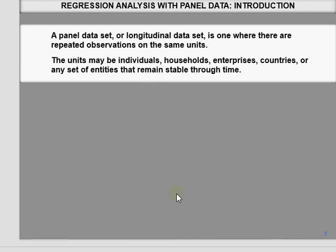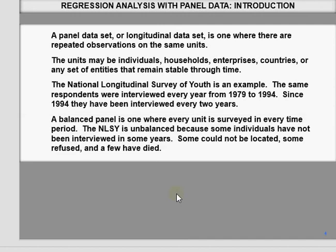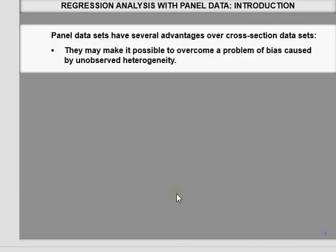The unit may be an individual, household, enterprise, country, or any other entity that remains stable through time. There is the National Longitudinal Survey of Youth — data discussed by Christopher Dougherty in his Introduction to Econometrics book — as well as Stock and Watson data. A balanced panel is where every unit is surveyed in every time period; if some individuals were not interviewed in some years, the data is unbalanced.